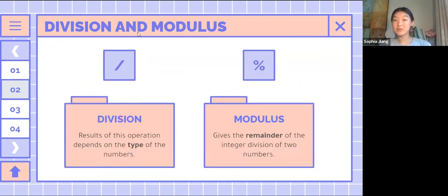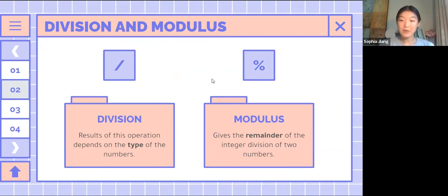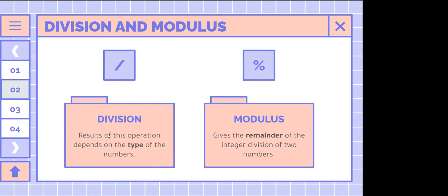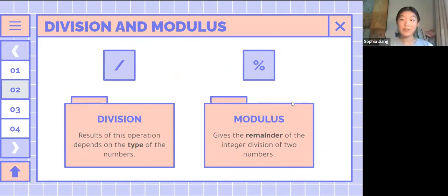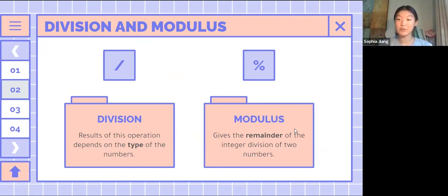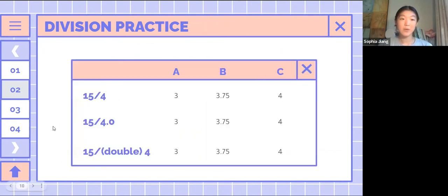Division is a bit more complicated — the result of this operation depends on the type of the numbers. We also introduced something called modulus, which gives the remainder of the integer division of two numbers.